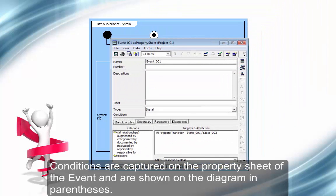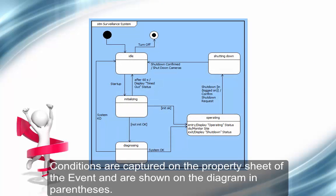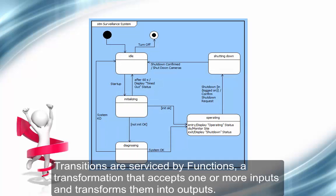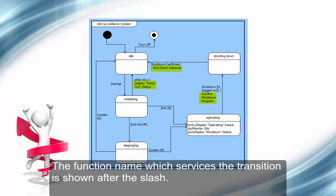Conditions are captured on the property sheet of the event, and are shown on the diagram in parentheses. Transitions are serviced by functions, a transformation that accepts one or more inputs and transforms them into outputs. The function name which services the transition is shown after the slash.